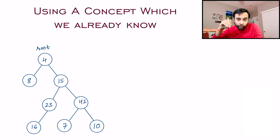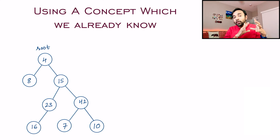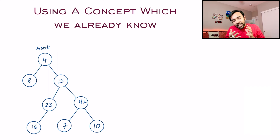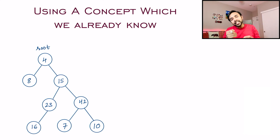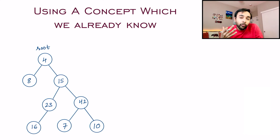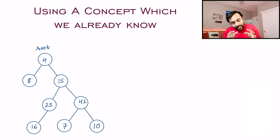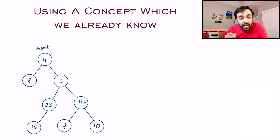As an interviewer myself, if I have to ask this question I would first ask the candidate about level order traversals and then as a follow-up question ask: okay, now what do you do if you have to do it in a zigzag fashion? You will understand why. So doing a quick recap — how does level order traversal actually work?